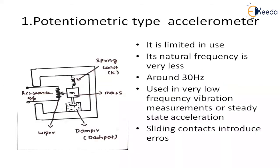The first accelerometer is the potentiometric accelerometer. The name indicates that we are going to use a potentiometer here, and it is one of the simplest forms of the accelerometer. Here the seismic mass is attached to the wiper arm of the potentiometer. This is the mass that is attached to the wiper arm. This outer casing is the accelerometer case.